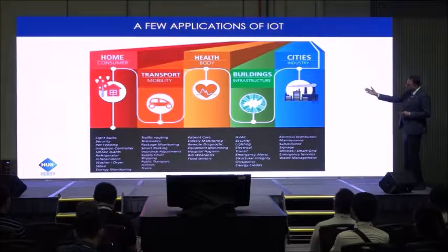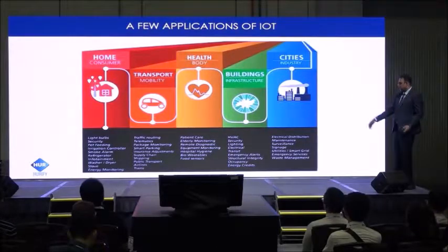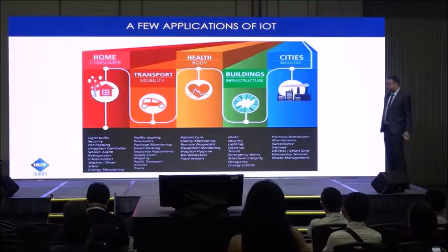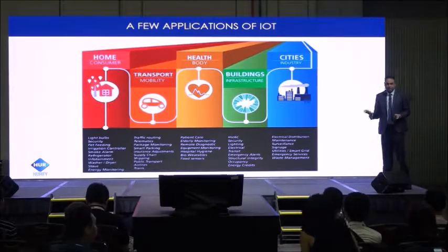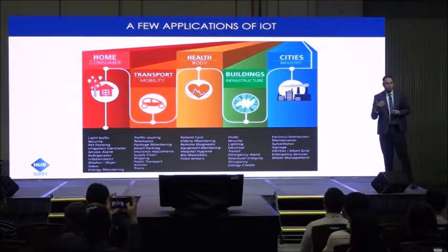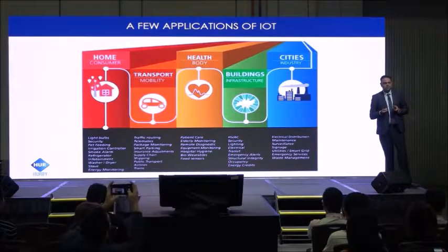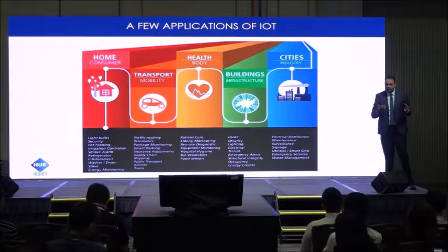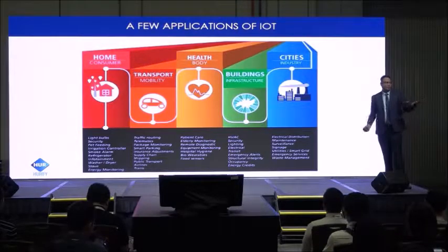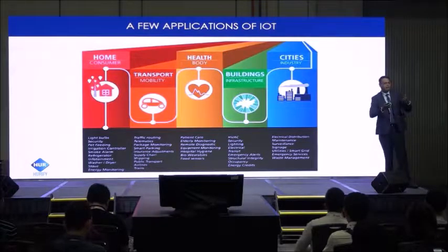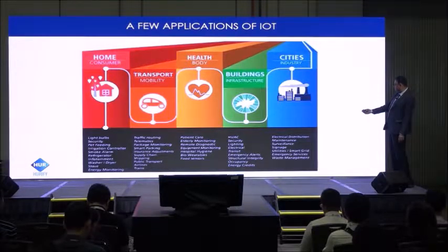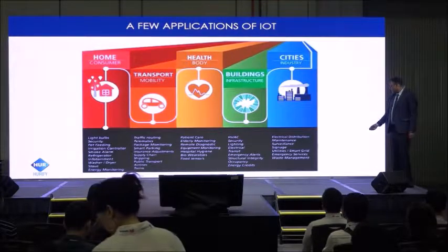What are the applications of IoT? For a home consumer, we have light bulbs, security, pet feeding, smoke alarm, smart refrigerator, and infotainment systems. For transport, we have traffic routing, telematics, smart parking, supply chain shipping, public transport, and airlines. For health and body, wearables can provide ready-made information about a person's health, detect alarming changes in body temperature, blood pressure, and heart rate, and immediately alert the authorities. For buildings and infrastructure, we have HVAC systems, security, and lighting — if there's nobody in the auditorium, the lights turn off and energy credits can be given. For cities, we have electrical distribution, maintenance, utilities, smart grid, and waste management.